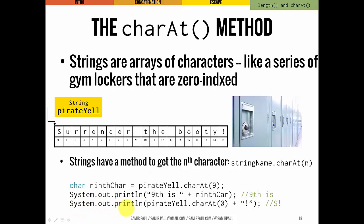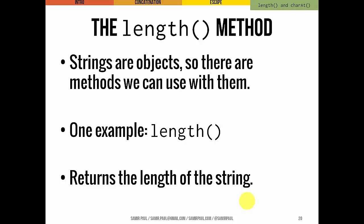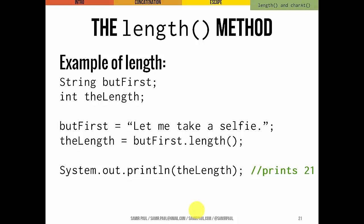Likewise, if I do System.out.println(pirateYell.charAt(0) + "!"), the character at 0 is S, and that ends up printing "S!". The length method is another method we can use with string objects — it just tells you the length of the string. We've declared a string called butFirst and an int called length. The string "Let me take a selfie" is instantiated implicitly. Then length = butFirst.length(). If we print that out, it's going to print 21 — that's the number of characters including spaces and punctuation, not including the quotes.